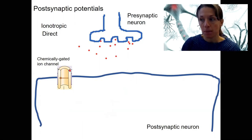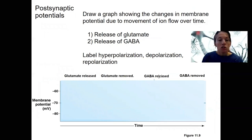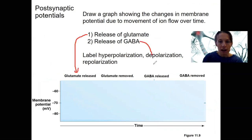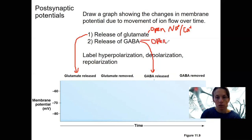Let's look at what this looks like in terms of changes in membrane potential. Draw a graph showing the changes in membrane potential due to the movement of ions over time — first the release of glutamate, then the release of GABA. Label these different components: hyperpolarization, depolarization, and repolarization. Glutamate is going to bind to receptors and open Na+/Ca2+ channels. GABA is going to open chloride channels.